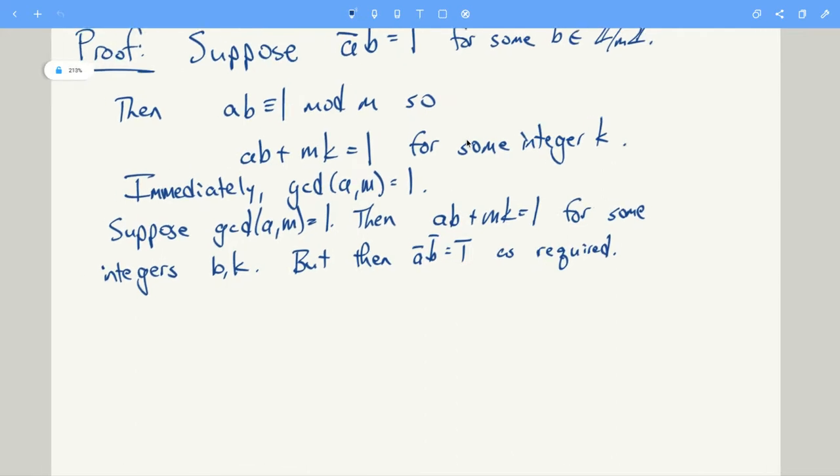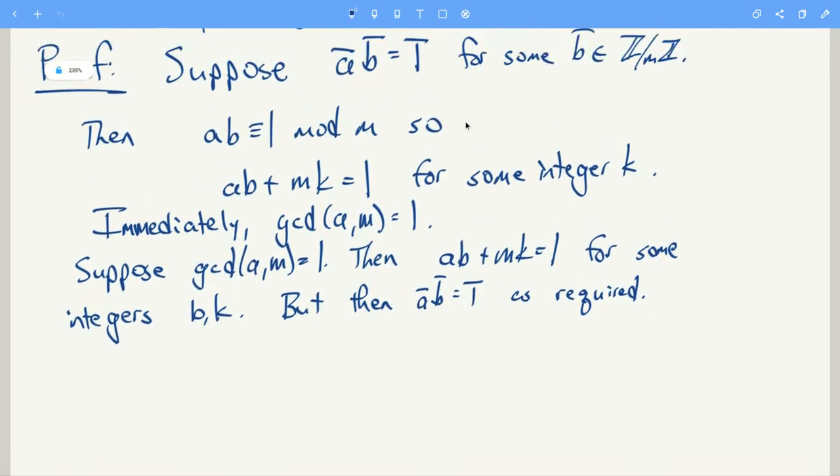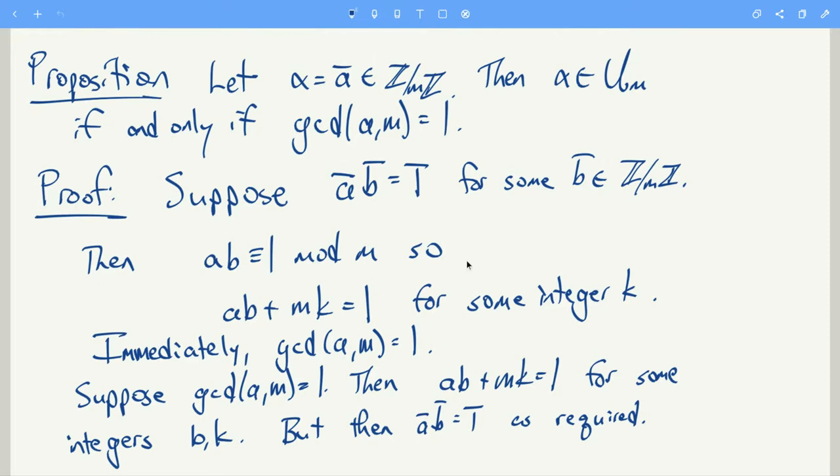And to end off the video, there's a quick proposition that will tell us which congruence classes are invertible. So we have this proposition. Let's take a congruence class mod m, then let's call it alpha, and then alpha is a unit modulo m, or it's invertible mod m, if and only if the GCD of a representative with m, so GCD of a with m is 1.